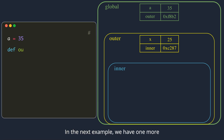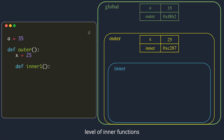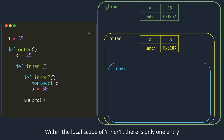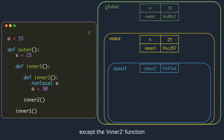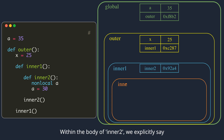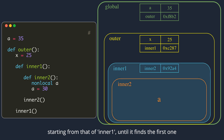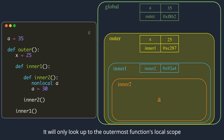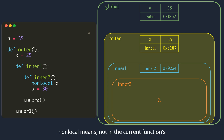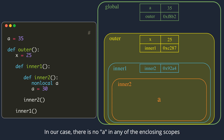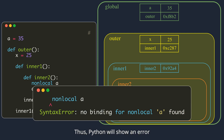In the next example, there is one more level of inner functions. Within the local scope of inner1, there is only one entry since nothing else is defined inside its body except the inner2 function. Within the body of inner2, we explicitly say that variable a is nonlocal. So Python will start looking in enclosing scopes, starting from that of inner1, until it finds the first match. It will only look up to the outermost function's local scope — it won't go to the global scope. Nonlocal means not in the current function's local scope and not in the global scope. In our case, there is no a in any of the enclosing scopes, so Python will show an error.